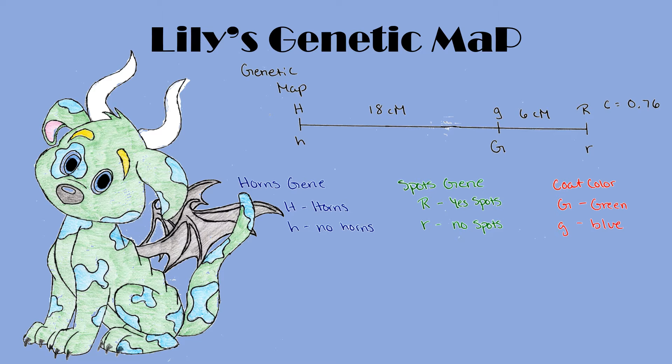The linked genes are big H for horns and little h for no horns, big R for spots and little r for no spots, and big G for green coat and little g for blue coat color.